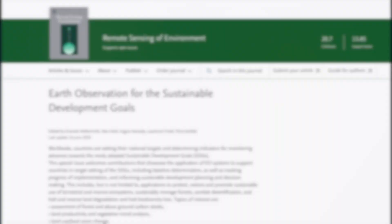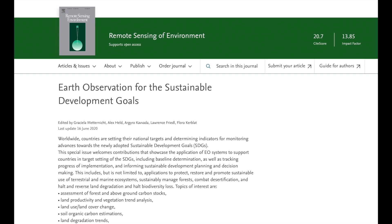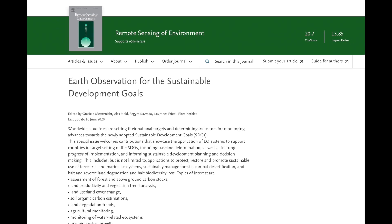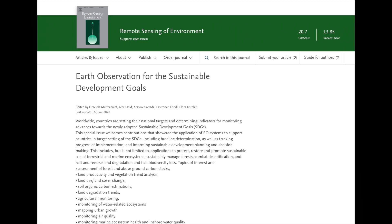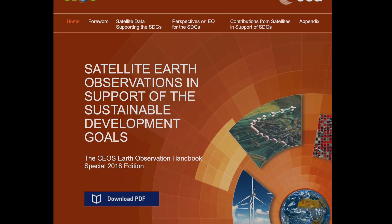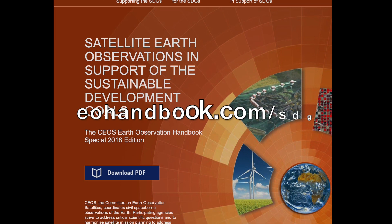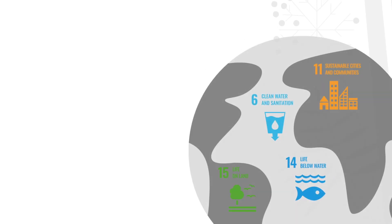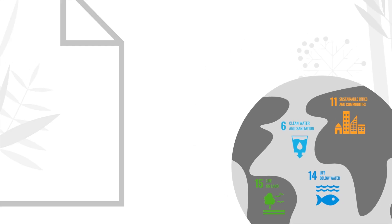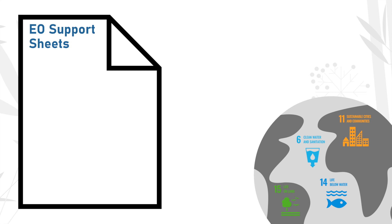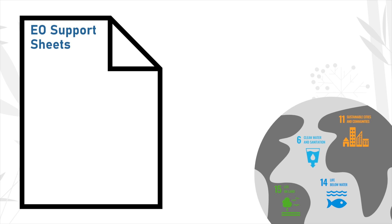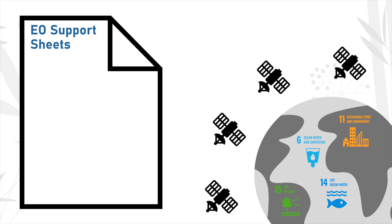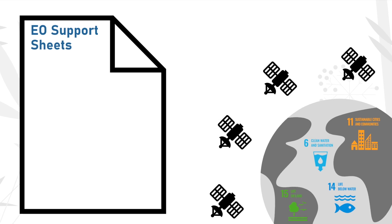The team also contributed to international reports and publications, including the special issue on SDGs in the Remote Sensing Environment Journal, and the publication of a special edition of the SEOS Earth Observation Handbook on SDGs, which can be found at eohandbook.com/SDG. A key component of SEOS contributions to the SDG framework is the creation of Earth Observation Support Sheets, developed in collaboration with GEO communities and end users to outline current approaches and challenges for measuring a specific SDG indicator.